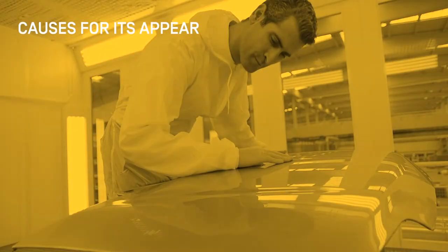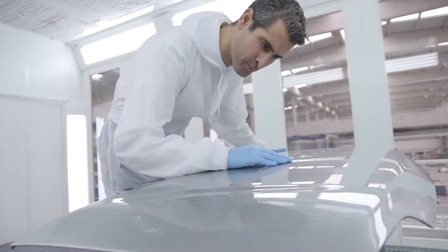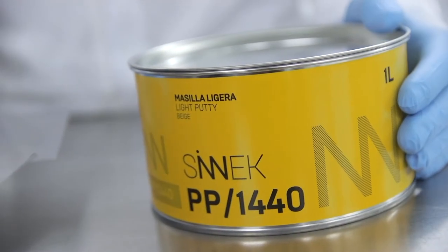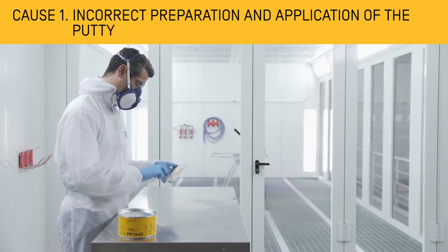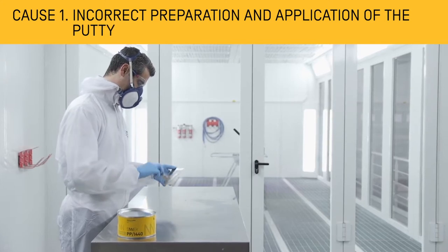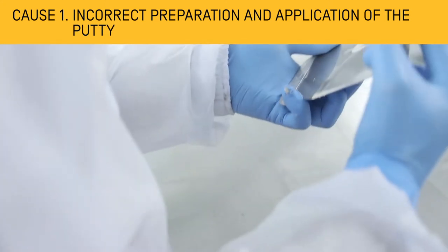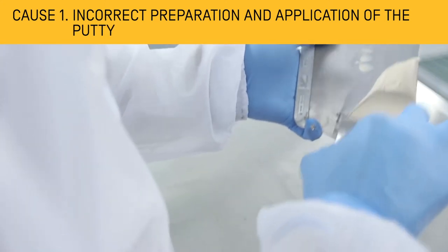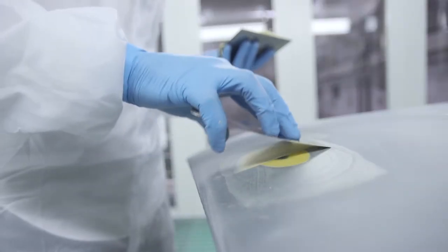The causes that lead to the appearance of sinkage can be diverse. Poor preparation, mixing and application of the polyester putty, due to the porous nature of the material, will cause absorption of the paint in the area where the putty has been applied.